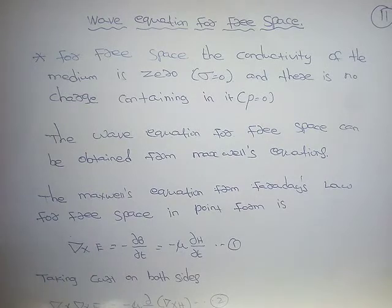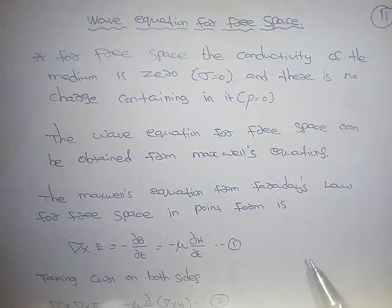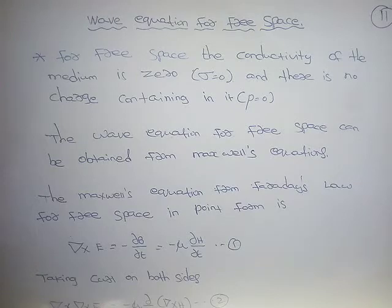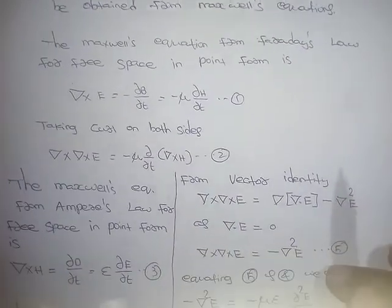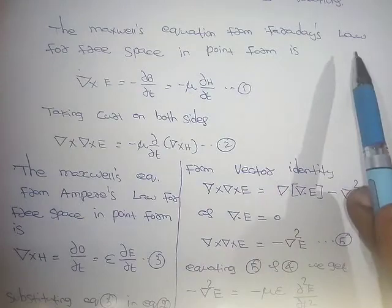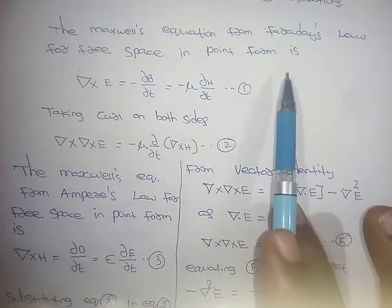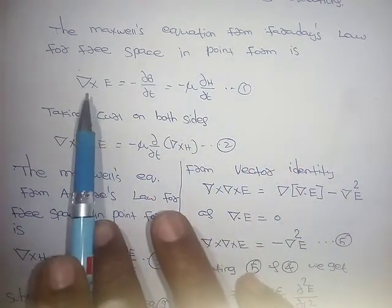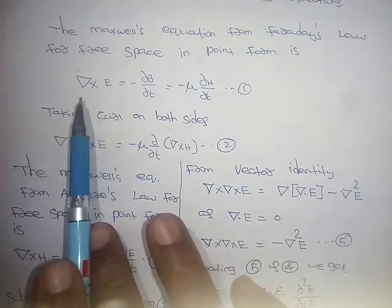For free space, we will derive the wave equation in terms of the electric field, and then in terms of the magnetic field. We start with Maxwell's equations in point form for free space, as explained in the previous video.